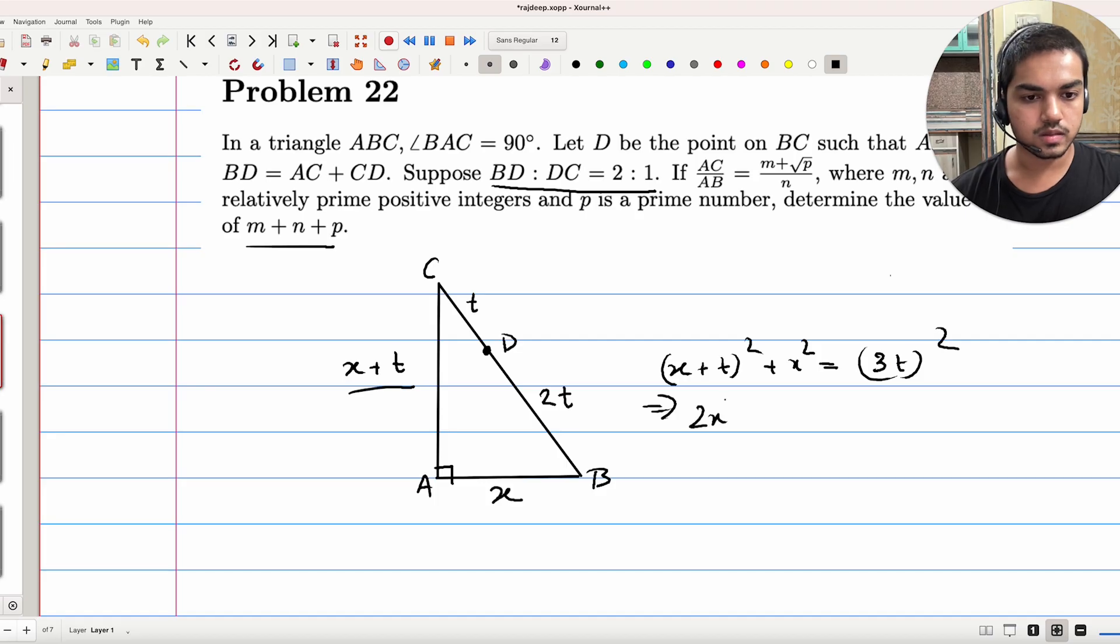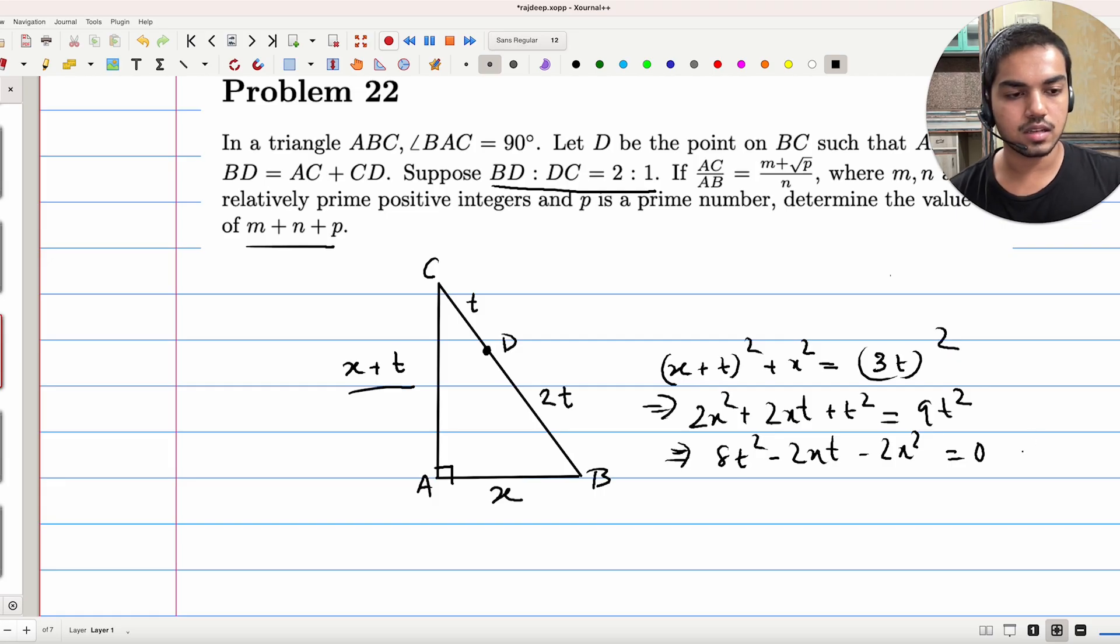Which implies 2X square plus 2XT plus T square is equal to 9T square. If I write this as 8T square minus 2XT minus 2X square, what we have is essentially a quadratic in T. You can think of it in both ways. You can think of it as a quadratic in X or a quadratic in T.